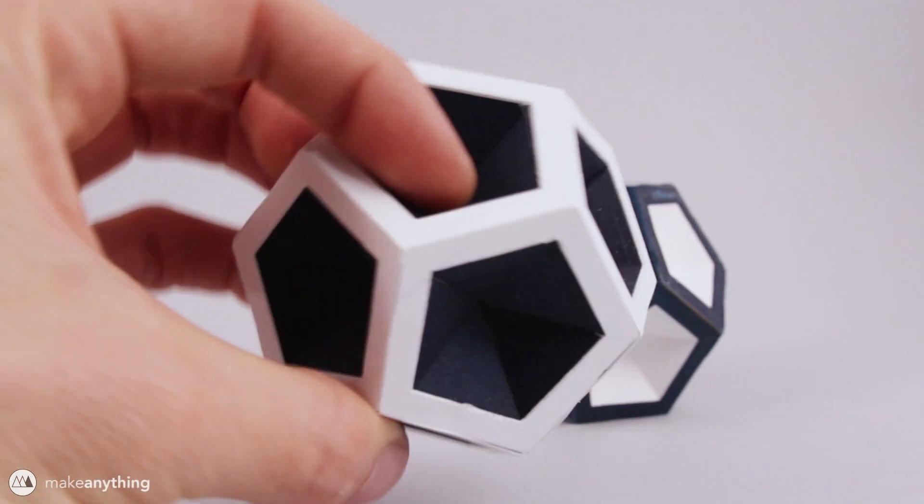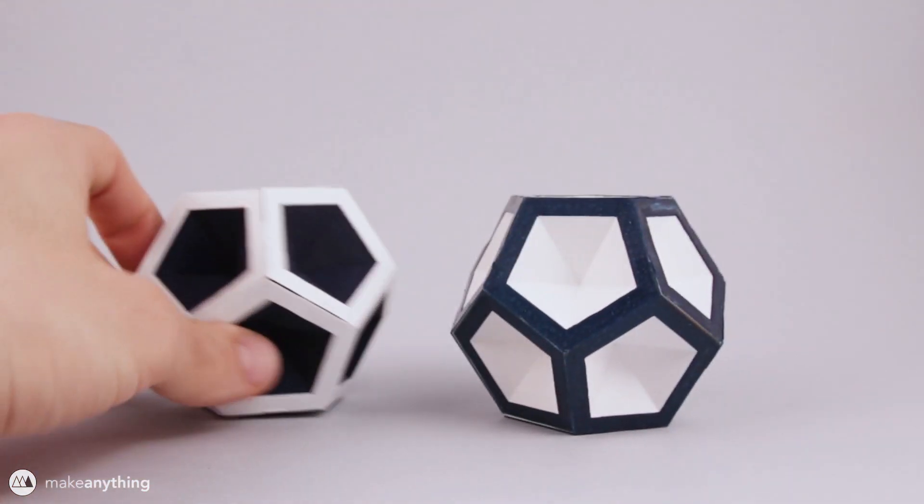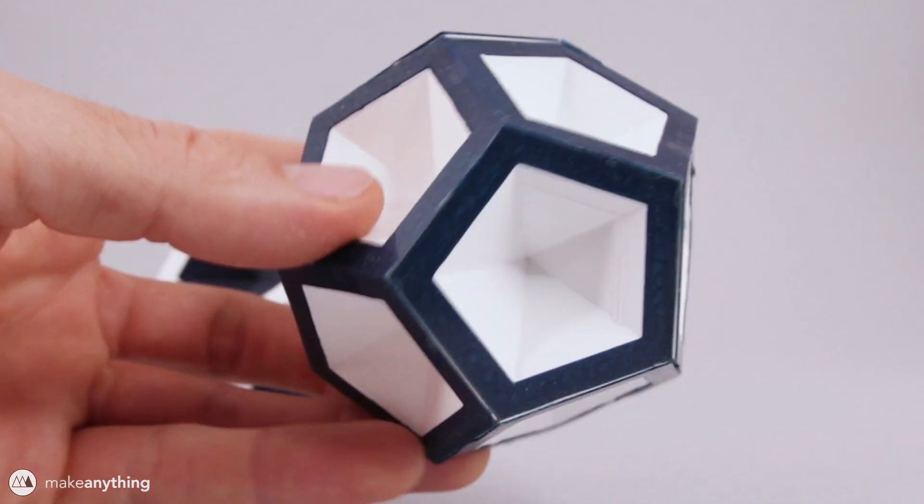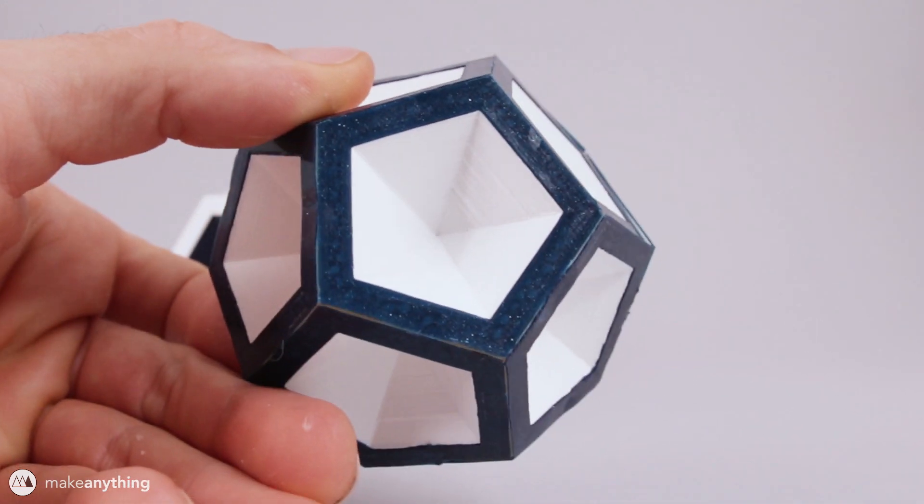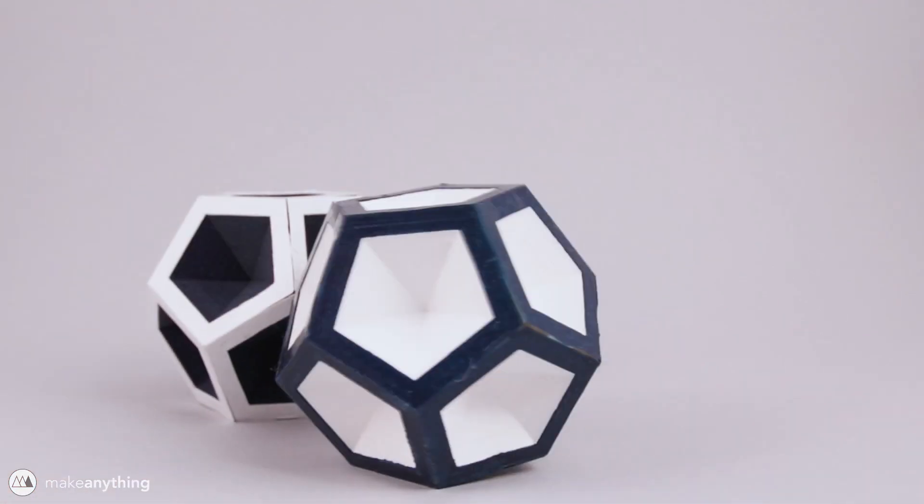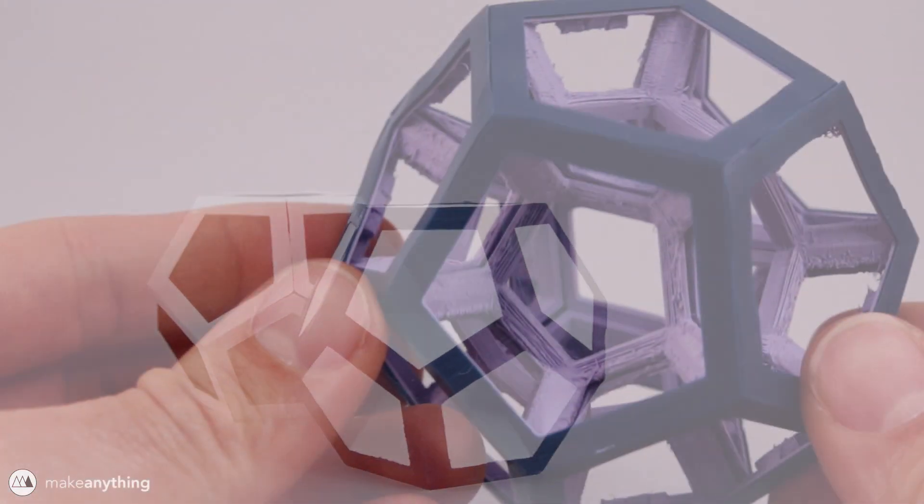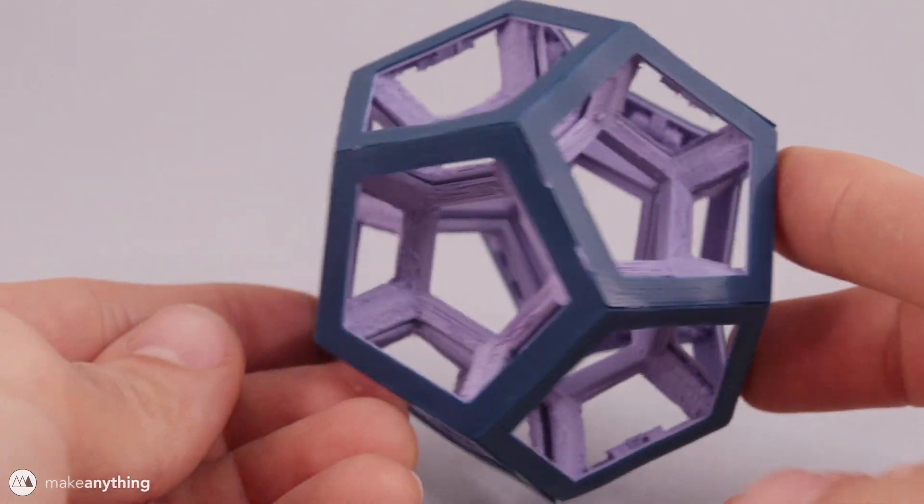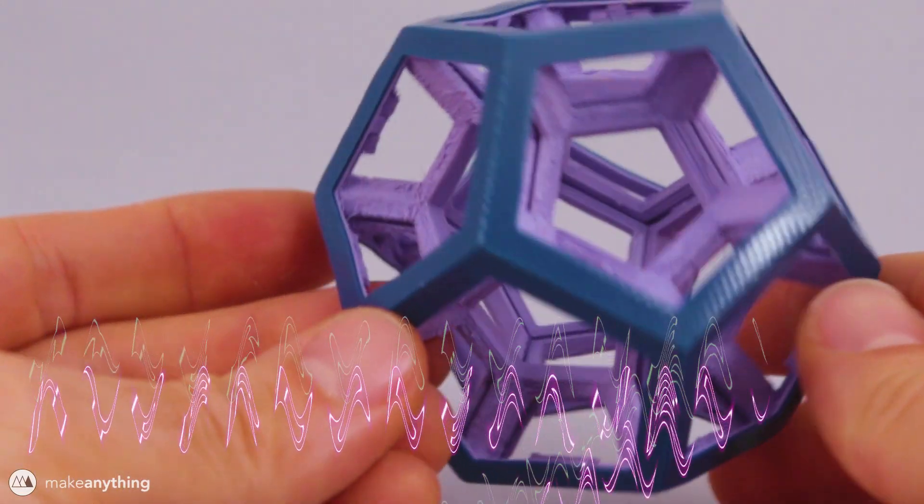Here I took the dodecahedron and I created these hollow pyramids so that when it's all folded together they all point inward towards the center of the shape and it just creates this really dramatic looking design. And you know I heard you like dodecahedron so I put a dodecahedron inside of this dodecahedron. A so-called hyperdecahedron.